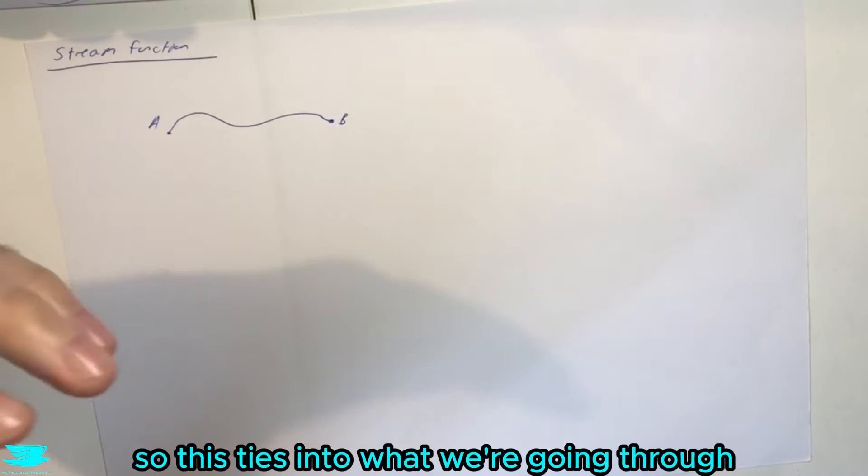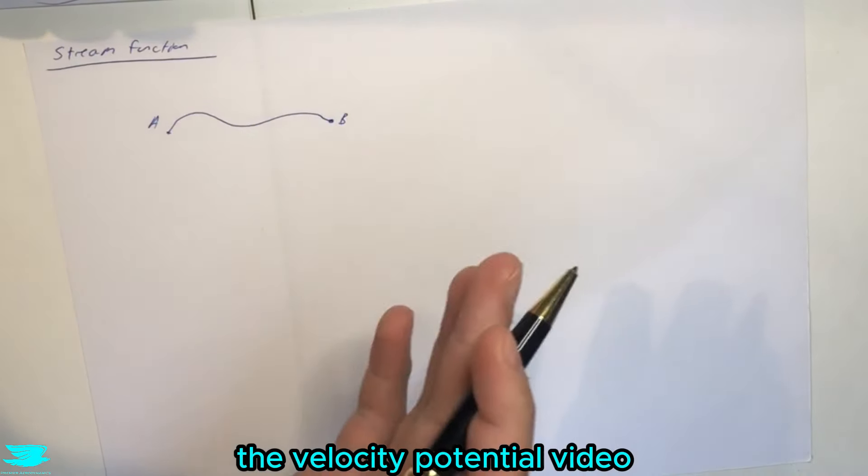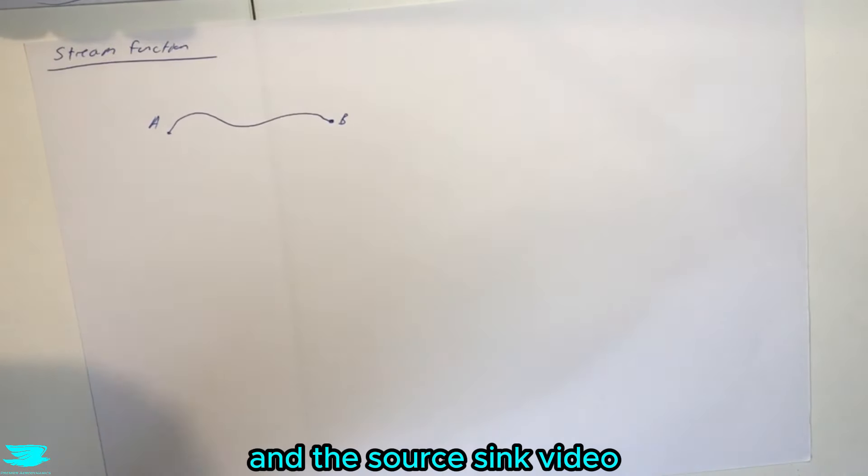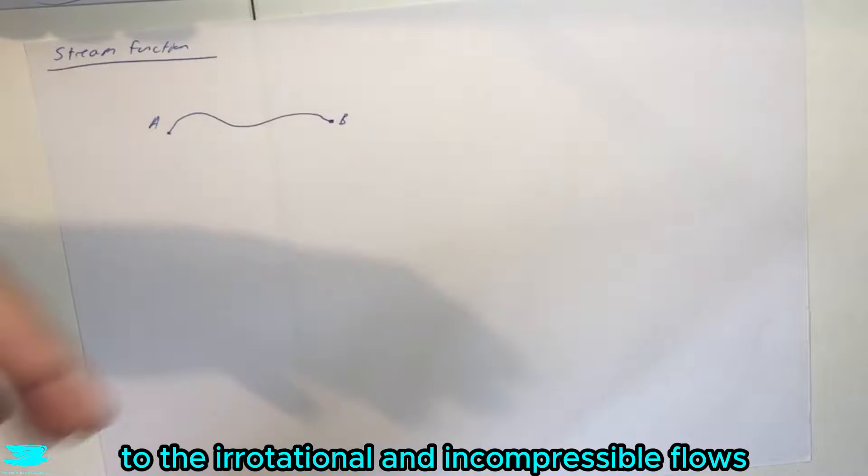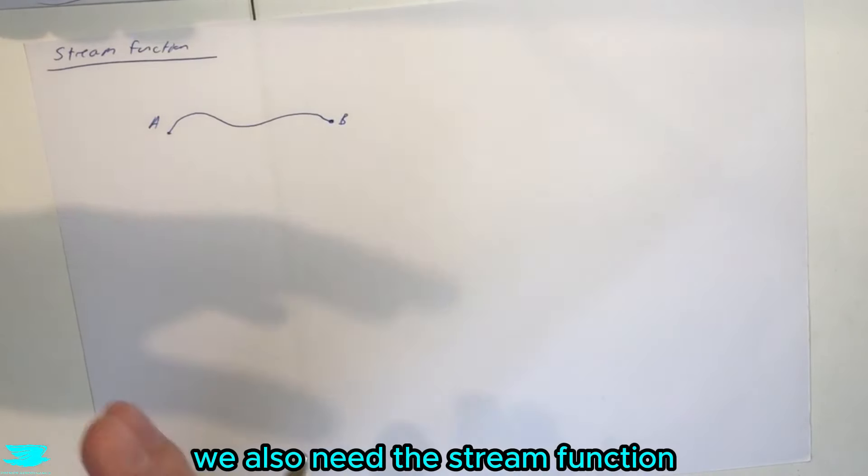So this ties into what we've been going through the last few weeks, for example the velocity potential video and the source sink video. In order to go further in our analysis of 2D irrotational incompressible flows we also need the stream function.